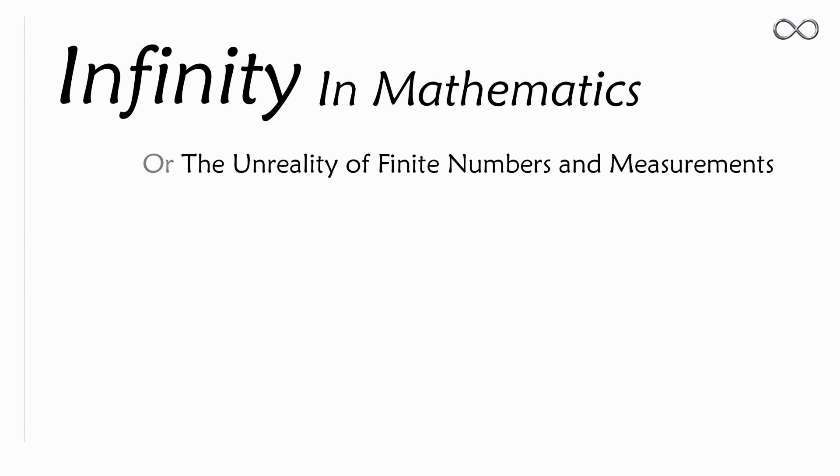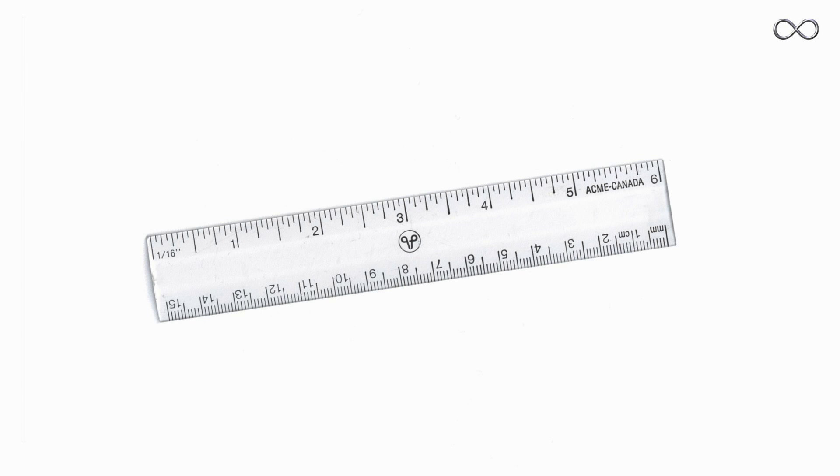The infinity in mathematics could also be called the unreality of finite numbers and measures, and it's quite mind-boggling. I will take this ruler to show you, and it doesn't really matter which object we looked at. However, the ruler is helpful because it already has numbers and measures to it. So naturally we think that everything can be measured in all its dimensions. In this case we say that this ruler is six inches wide. However, how real are six inches? How real is this measurement?